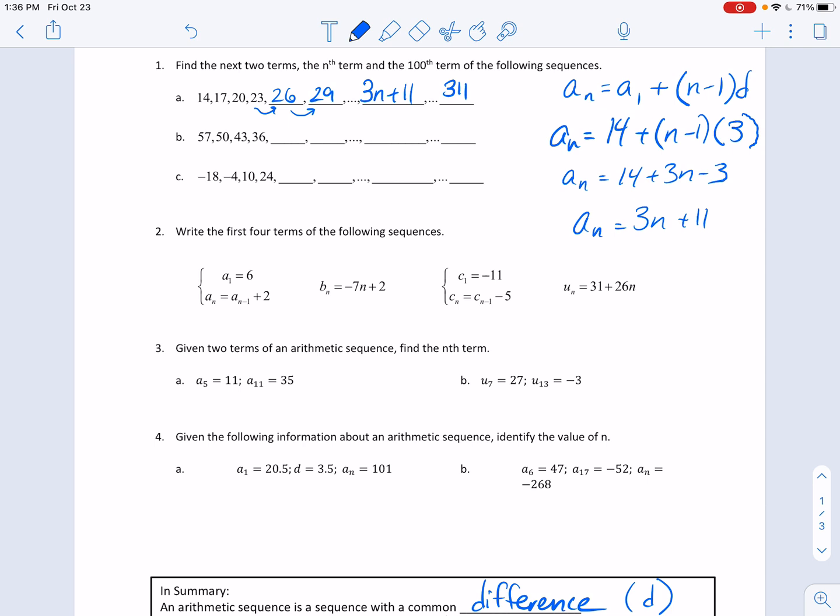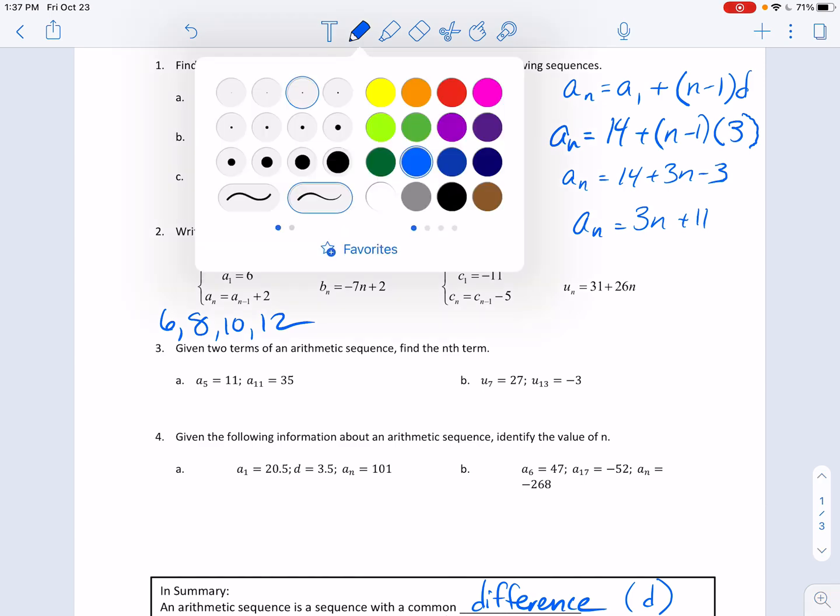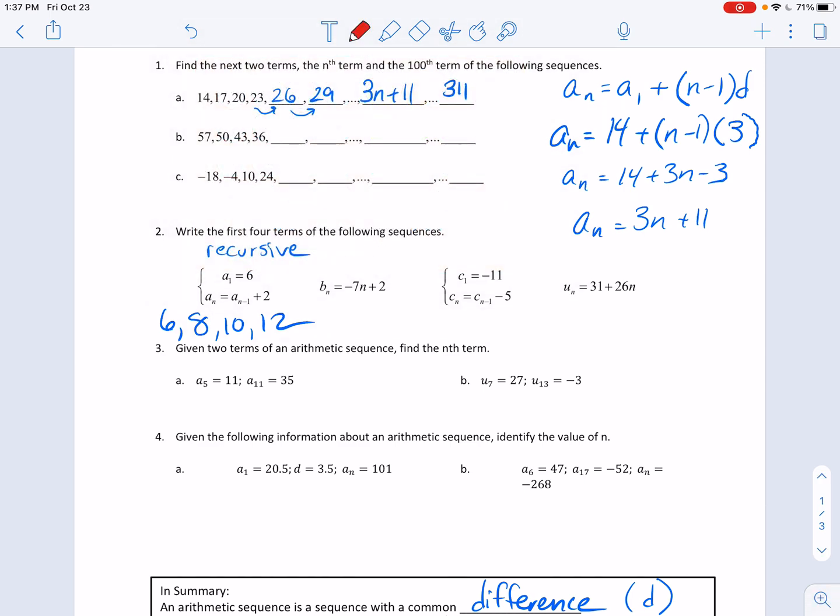Write the first four terms of the following sequence. On this one, this is that recursive formula. So what they're doing is they're telling me where to start and what to do. In this particular one, they're telling me where to start, 6, and what am I doing each time, I'm adding 2. And there's the first four terms. Then the next one, the other thing that they might do is they might give me this sort of a situation B sub n.